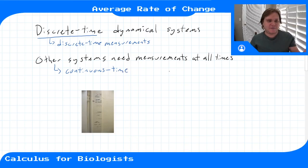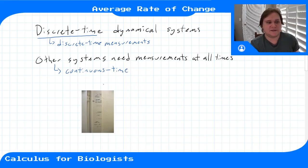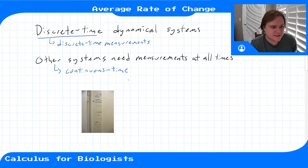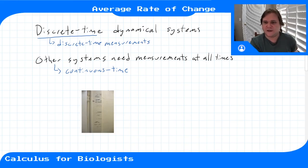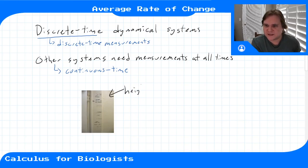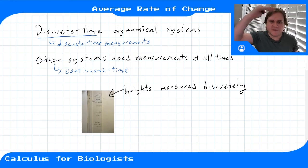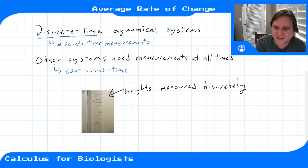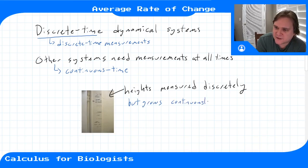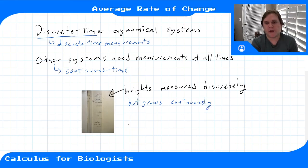Maybe you can't physically measure it at all times, but you could write down a model that describes what happens in between your measurements. A nice example of a continuous time system that's often measured discretely would be the height of yourself as a kid. Maybe your parents — or you're doing this for your kids now — have a doorway in your house and measure heights at different points in time. But humans don't just jump between heights; they grow continuously, very slowly over time. It's just often measured discretely — you mark down your height every year in the doorway of your house.